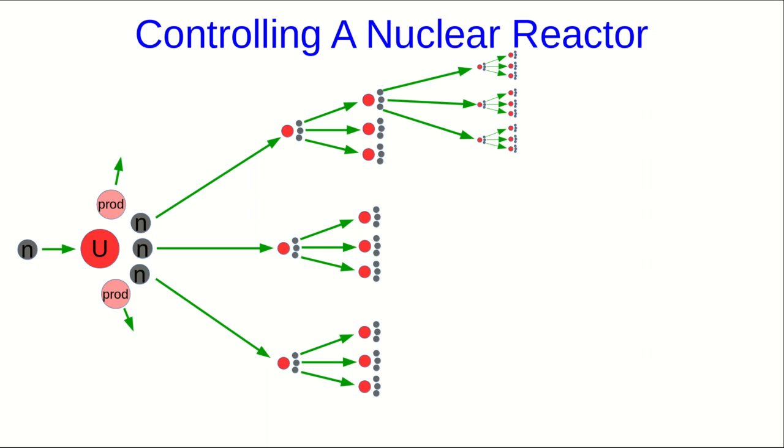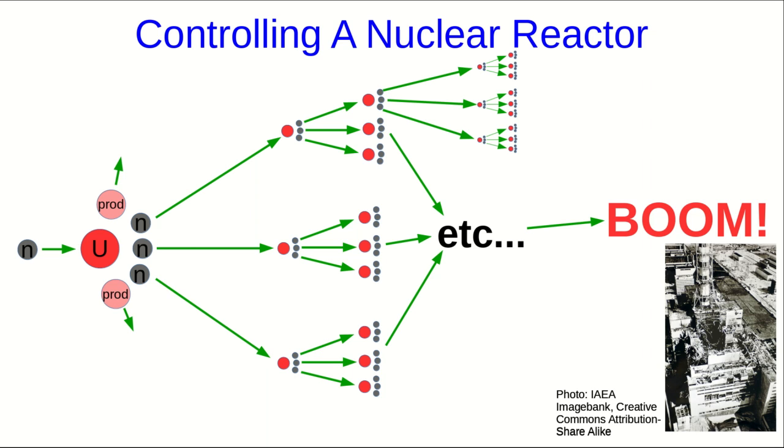That chain reaction will grow and grow and keep growing. I can't really draw it any further than this, so I'll just say etc. This runaway reaction leads to what is technically known as boom. This is what happens in an atomic bomb and is also, avoiding a bunch of complications, what happened in the Chernobyl disaster.